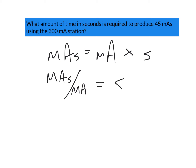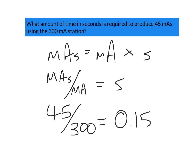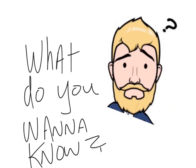In this case we have mAs = 45, divided by 300 mA, so we're expecting a very small number. The correct answer is 0.15 seconds. Hopefully that's helpful — send me your comments and questions, I look forward to hearing from you.